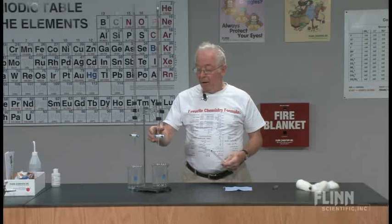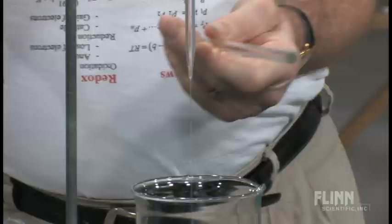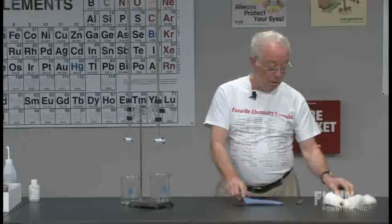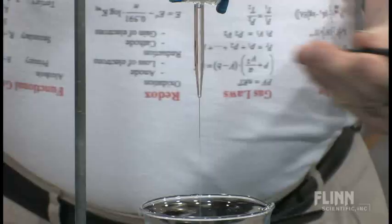Let's try the same thing with the other liquid we have here — toluene. With a glass rod, positive charge on the glass rod. Negative charge on the ebonite rod.